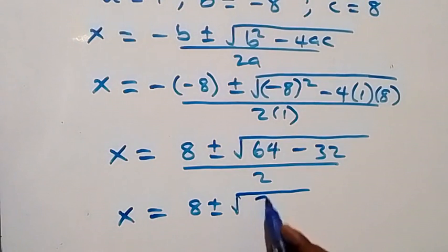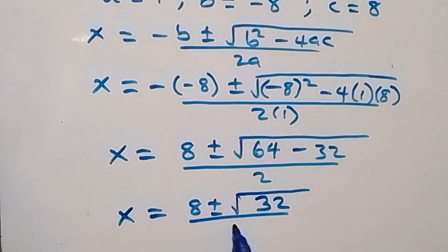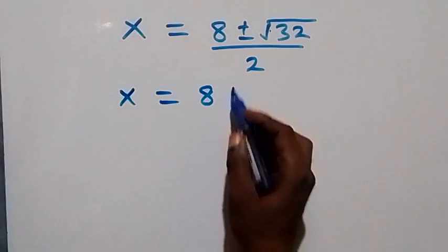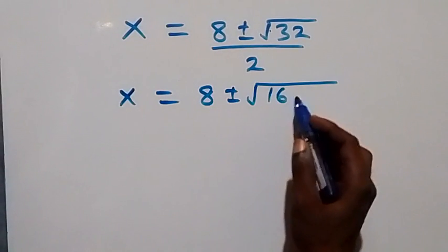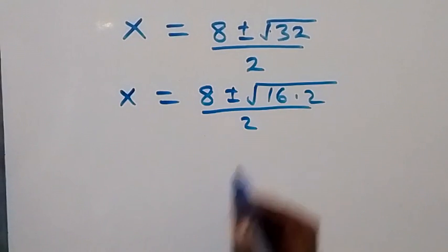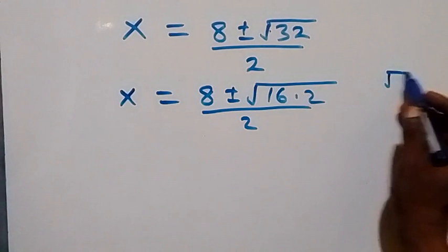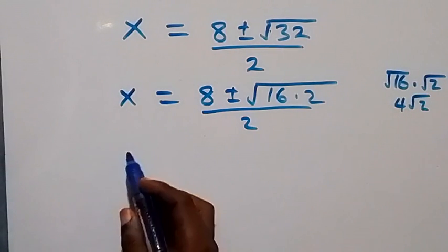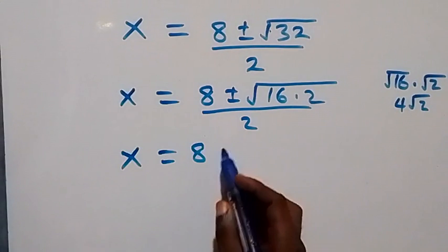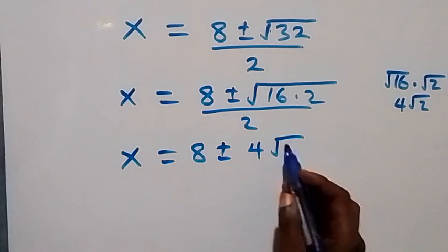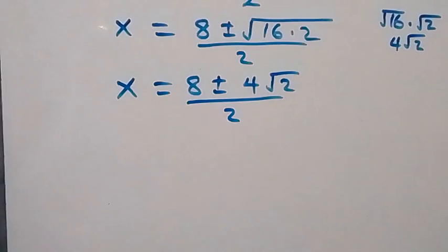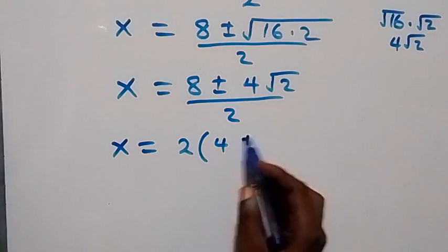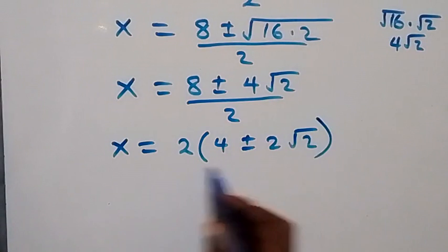Simplifying, square root of 32 equals 4 root 2. So we have x equals (8 plus or minus 4 root 2) over 2. Factoring out 2 from the numerator gives x equals 2 times (4 plus or minus 2 root 2) over 2, and these cancel to give x equals 4 plus or minus 2 root 2.